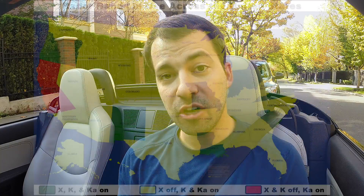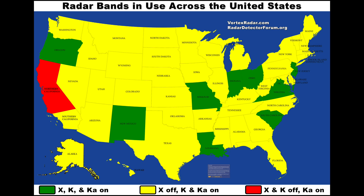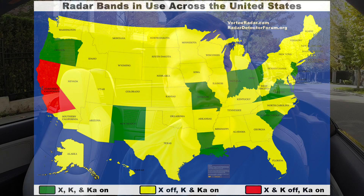Now, speaking of the Unidens, they're strong on 34.7, but not as much on 33.8 or 35.5 like the Redline and the Magnum. Additionally on X band, it's actually kind of weak. So if you are in the green states where X band is in use — especially Ohio and New Jersey where it's in very active use — you may want to consider skipping the Uniden detectors like the DFR6 and the DFR7, and maybe go for a detector like a MAX, a V1, or a Redline that has better X band performance.